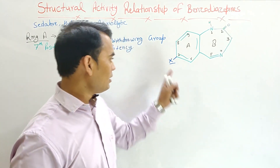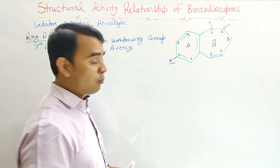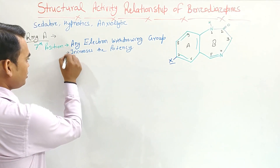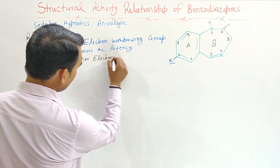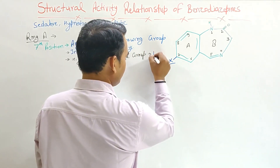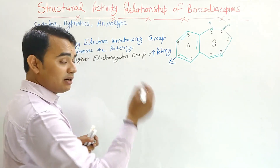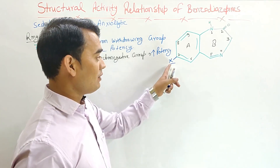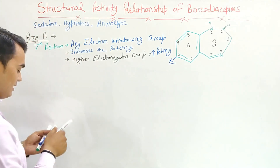Nitrazepam has the nitro group at position 7, but diazepam does not have a substitution at position 7. One more point: the more the electronegativity of the electron withdrawing group, the more the potency. A higher electronegative group gives higher potency. For example, nitrazepam has the nitro group at the 7th position while diazepam and other benzodiazepines have chlorine. The nitro group has more electronegativity, meaning it has more potency.